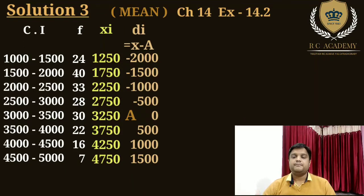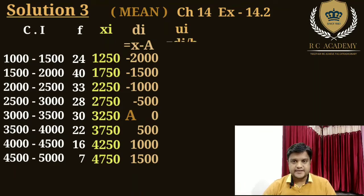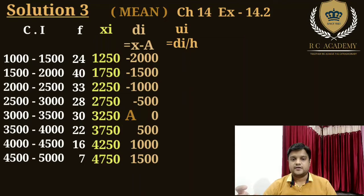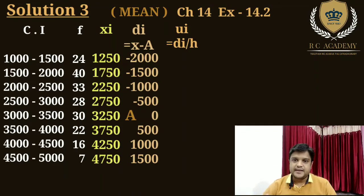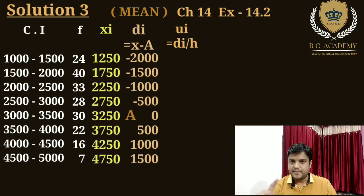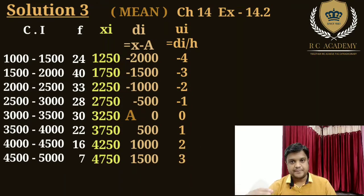di nikaalene ke baad hum ui nikaalenge. ui = di / h, ya ui = (xi - a) / h. Yahan h = 500 (width of class interval). Toh -2000/500 = -4, phir isi tarah: -3, -2, -1, 0, 1, 2, 3. Toh aapka ui aa gaya.